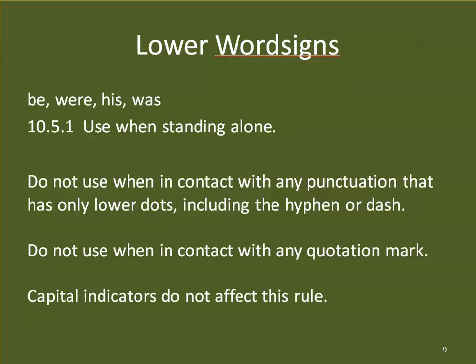The next group of lower word signs are BE, WERE, HIS, and WAS — these special four. We can use these when standing alone. However, they are not to be in contact with any punctuation that has only lower dots. The hyphen and dash are punctuation with only lower dots, so we can't use those four words in conjunction with a hyphen or a dash. Basically, we can only use them when there are spaces around.